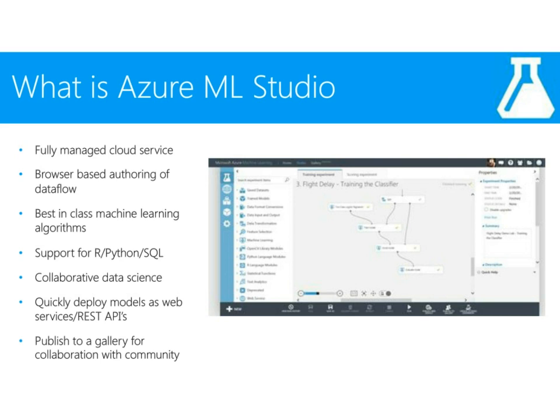It's also important to know that it has the best-in-class machine learning algorithms from MSR, Bing, and Xbox. There's an enormous amount of support for R, Python, and SQL, which covers a vast majority of data scientists, developers, and BI engineers. Versioning allows collaborative data science, and you can quickly deploy models as web services and REST APIs. You can also publish to a gallery, and these experiments can help improve the quality of experiments in the Azure Machine Learning Gallery for community-level collaboration.